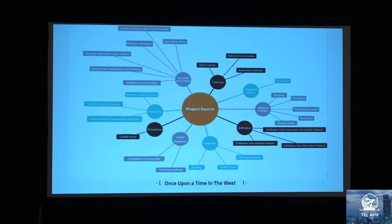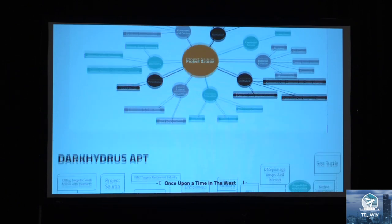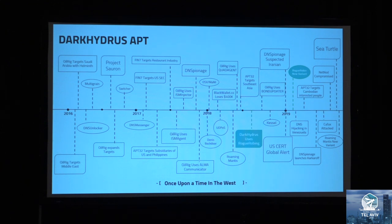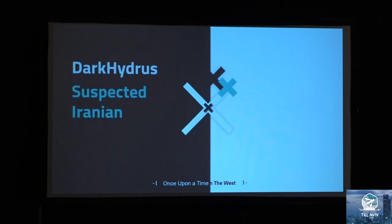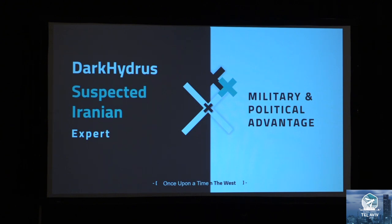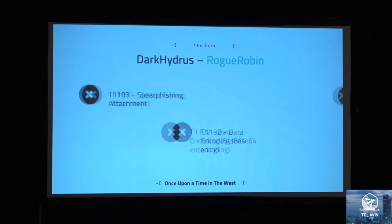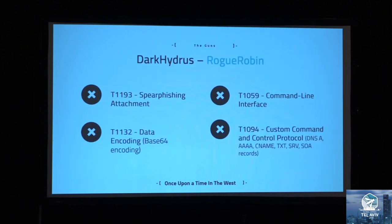We also have several other threat actors using these kinds of attacks. Dark Hydrus was first discovered and disclosed in July 2018 by Palo Alto. This threat group uses a malware called Rock Robin, originally based on PowerShell and now an executable. They use DNS tunneling for communication and added the Google API as a fallback channel. This actor is also suspected to be Iranian and is considered expert-level, motivated by military and political advantage. Rock Robin has a hard-coded list of DNS record types and tries to reach the C2 with each one — whichever answers quickest is used for bidirectional communication with the trojan.